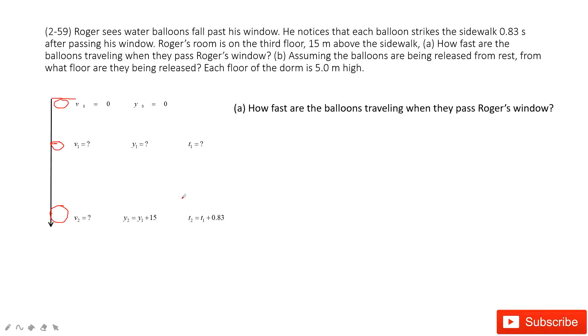Then, this is a free fall body. The acceleration is always pointing down with magnitude 9.8 meters per second squared. Ask you, how fast are the balls traveling when they pass Roger's window? So the first one asks you V1, right?